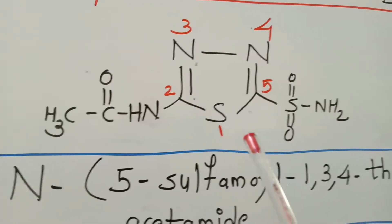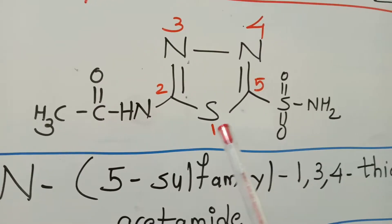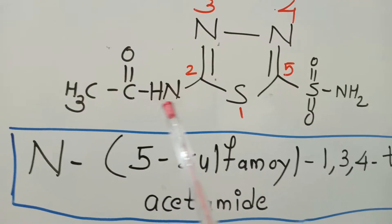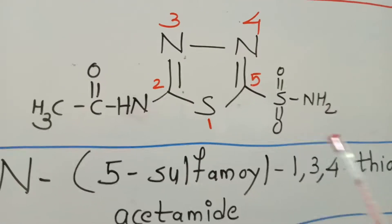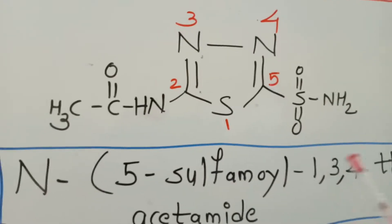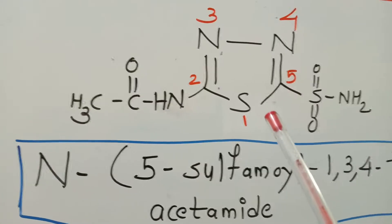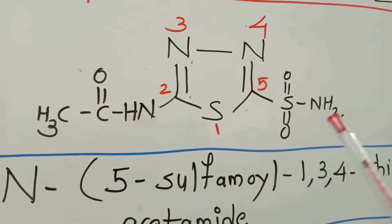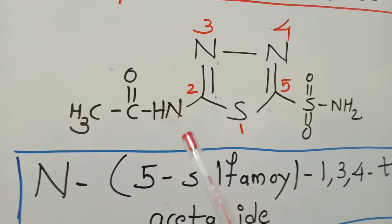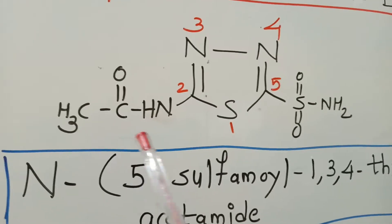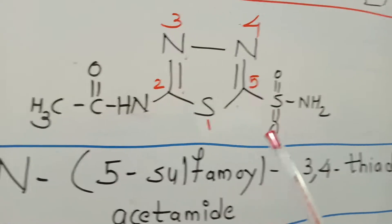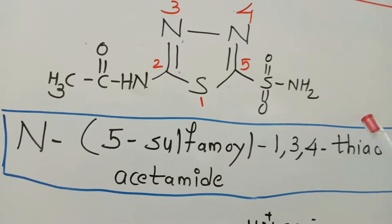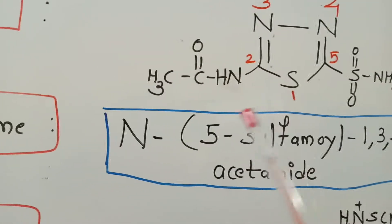Besides this, there is the presence of two functional groups. The first one is the carboxylic acid amide and the second one is the sulfonamide. As you are all aware, the carboxylic acids are superior to the sulfonic acids. Hence, the carboxylic amide is superior over the sulfonamide, so we consider this in the IUPAC nomenclature of this compound.